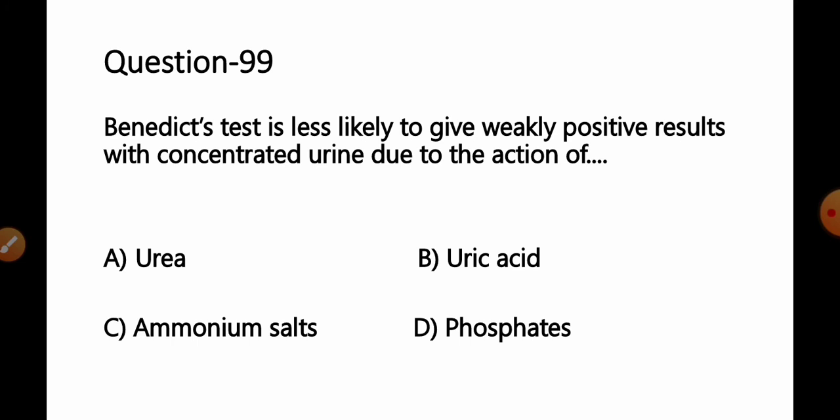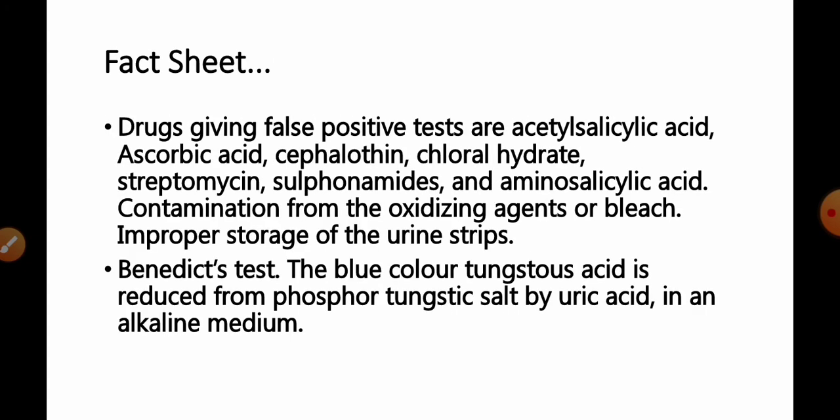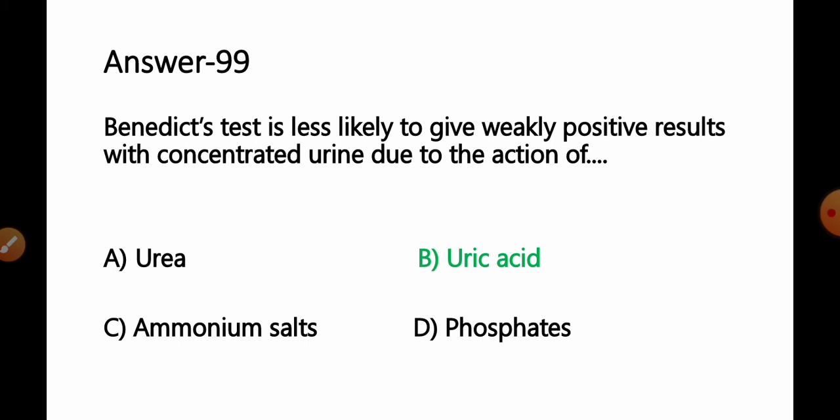Question 99: Benedict's test is less likely to give weakly positive results with concentrated urine due to the action of: A) Urea, B) Uric acid, C) Ammonium salt, D) Phosphate. Fact: Drugs that give false positive Benedict's test include acetyl salicylic acid, ascorbic acid (vitamin C), cephalothin, chloral hydrate, streptomycin, sulfonamides, and amino salicylic acid. Contamination from oxidizing agents or bleach or improper storage of urine strips also gives false positive results. In one modification of Benedict's test, blue tungustic acid is reduced from phosphotungstic salt by uric acid in an alkaline medium. Uric acid gives false positive Benedict's test. Option B, uric acid, is the correct answer.